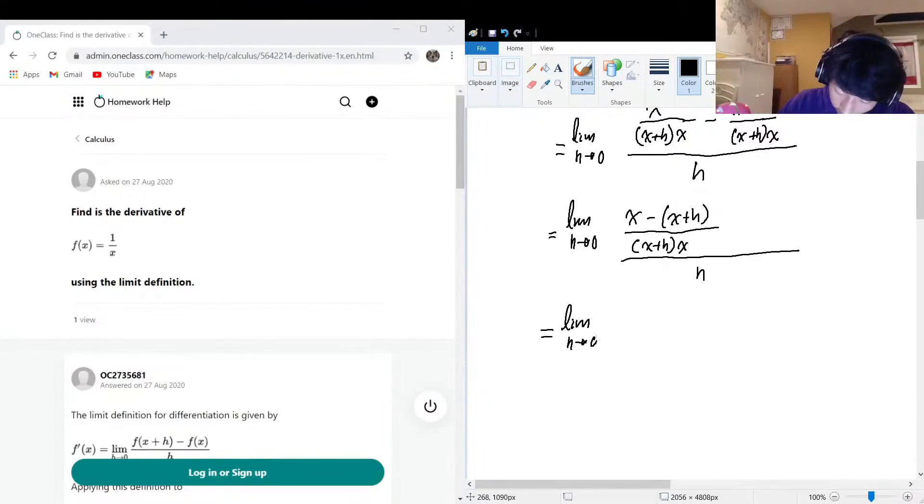And we can rewrite this as limit as h approaches zero. This is equal to, well, x minus x minus h over x plus h times x, multiplied by one over h. That's just what I mean by this whole thing divided by h, we can just multiply the whole thing by one over h.